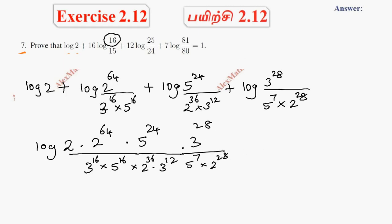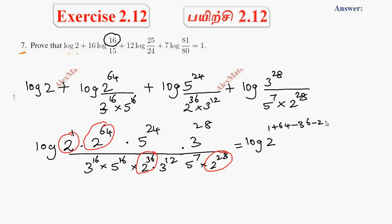Now we combine the product of like terms. For the powers of 2: we have 2 to the power 1 plus 64 minus 36 minus 28, which equals 2 to the power 1. For the powers of 3: we have 3 to the power 28 minus 16 minus 12, which also equals 3 to the power 0. For the powers of 5: similarly 5 to the power 24 minus 16 minus 7 equals 5 to the power 1.